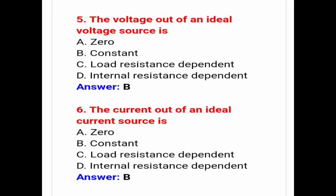Fifth MCQ: The voltage out of an ideal voltage source is? Answer is B — constant. Sixth: The current out of an ideal current source is? Answer: constant.